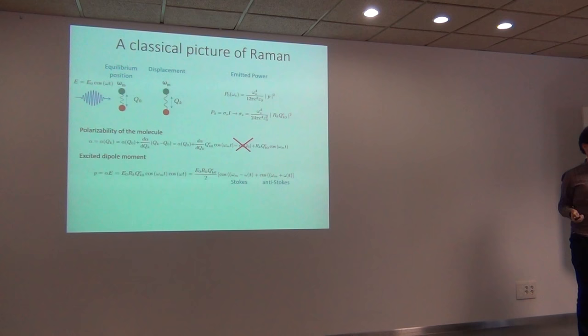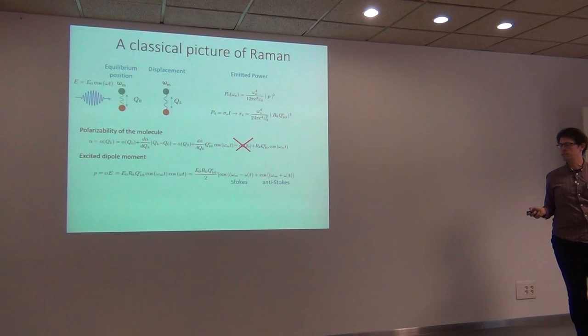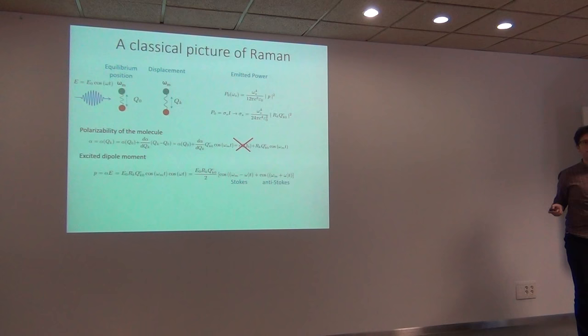This already gives a good idea of where these lines come from, but it presents several problems. The biggest one is that this classical picture predicts that the strength of the Stokes and anti-Stokes are the same. As we will see later, this is not the case — if you have done Raman, you will notice anti-Stokes is usually much, much weaker.